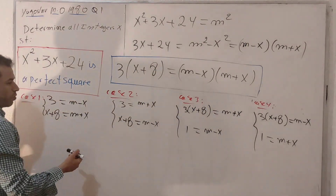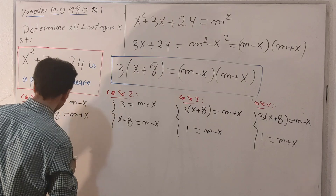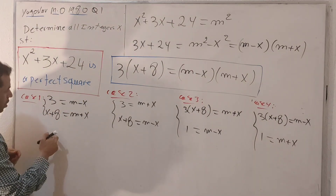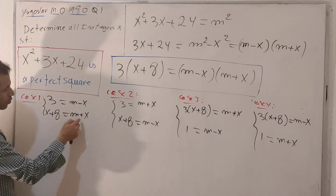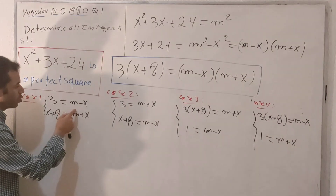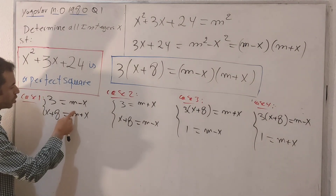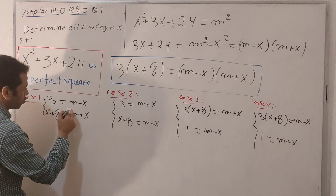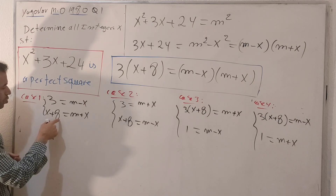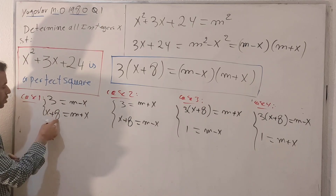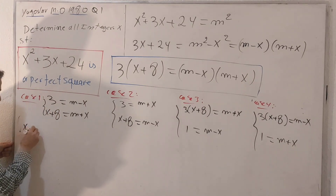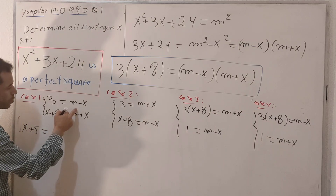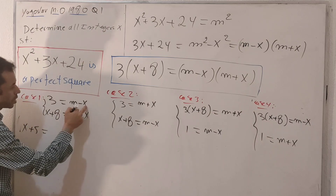Now we go through each case. For case one, I'll eliminate m from the system. Doing the second equation minus the first: (x + 8) minus 3, which gives x + 5 on the left. The m terms cancel, leaving x minus (minus x), which is 2x.